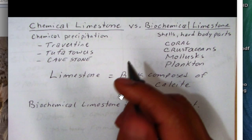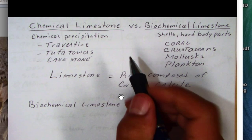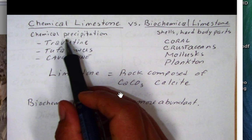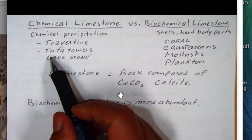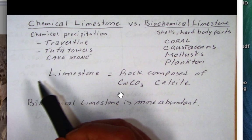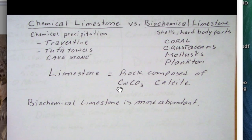Chemical limestones involve the precipitation of calcium and carbonate from water. Examples of chemical limestones include travertine, the famous tufa towers over at Mono Lake and Searles Lake in the Mojave Desert, and then cavestone, which is also found in caves. Remember, limestone can be generally defined as a rock composed of the mineral calcite. Recall that calcite will effervesce in hydrochloric acid, and so limestone also effervesces. We'll do some testing of that in a little bit.